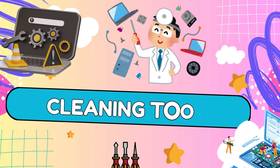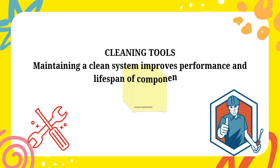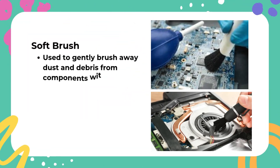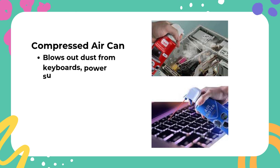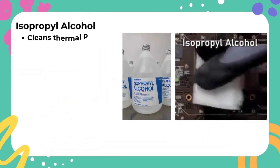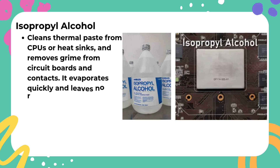Cleaning tools: Maintaining a clean system improves performance and lifespan of components. Soft brush: Used to gently brush away dust and debris from components without damaging them. Compressed air can: Blows out dust from keyboards, power supplies, fans, and inside the computer case without physical contact. Isopropyl alcohol: Cleans thermal paste from CPUs or heat sinks and removes grime from circuit boards and contacts. It evaporates quickly and leaves no residue.